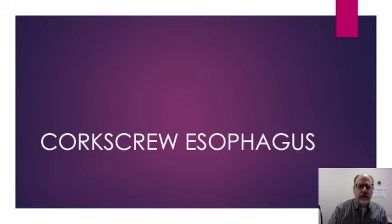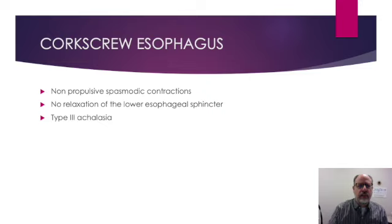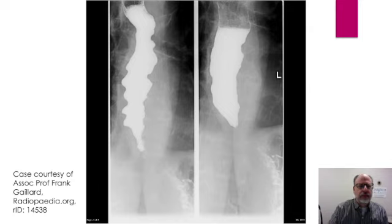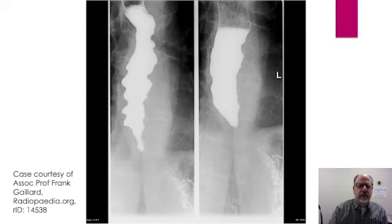Corkscrew esophagus, often referred to as spastic achalasia, has a typical radiographic appearance. There are non-propulsive spasmodic contractions with no relaxation of the lower esophageal sphincter. These two images from a barium esophagram demonstrate a typical appearance of a corkscrew esophagus. There are multiple indentations on the lumen due to multiple contractions. These contractions do not result in passage of barium and cause up-and-down, to-and-fro movement of the barium column without emptying.